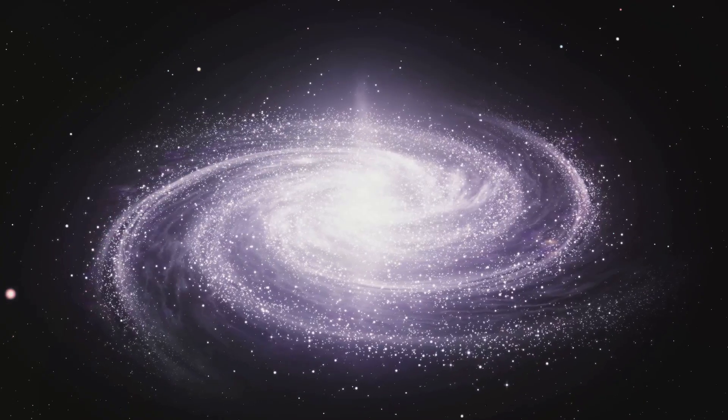One of the key pieces of evidence for dark matter is the phenomenon known as gravitational lensing. This is when the path of light is bent as it passes through a massive object, like a galaxy. This bending effect, predicted by Einstein's theory of general relativity, is much stronger than expected. It's as if there's a whole lot more mass in these galaxies than we can see. This invisible mass is what we call dark matter.